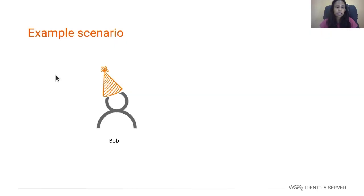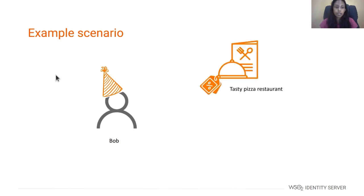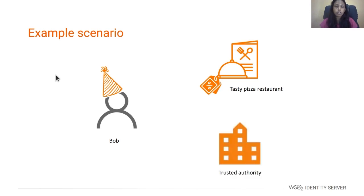Let's take an example scenario to make it easy to understand how verifiable credentials are used. Here is Bob, whose birthday is on June 17th. And here is the Tasty Pizza Shop, which offers a 20% discount on a customer's birthday. To claim the offer, Bob can prove his birthday via verifiable credentials issued by a trusted party, for example, the government. You can see there are three parties in this example scenario: Bob, the Tasty Pizza Restaurant, and the trusted authority. Bob is referred to as the holder who owns and holds the verifiable credentials. The trusted party refers to the issuer who has authority to issue verifiable credentials. And finally, the pizza shop refers to the verifier who verifies the credentials that the holder presents.